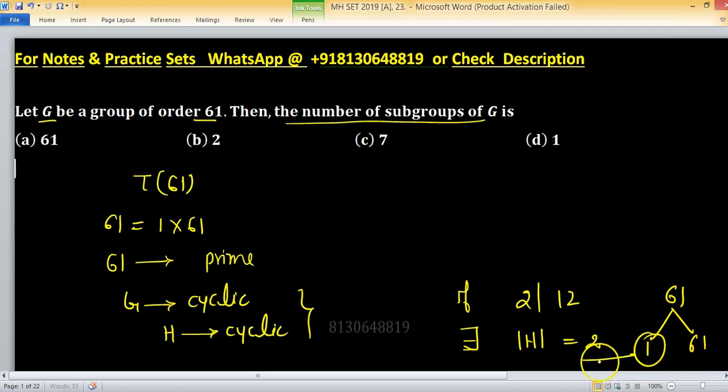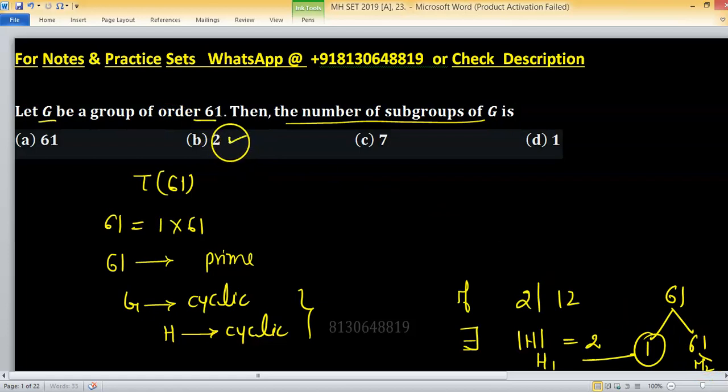For each divisor, there exists a subgroup, so we have H1 and H2. Therefore, there are only 2 subgroups. Option B is correct.